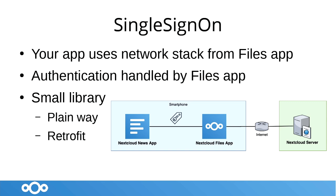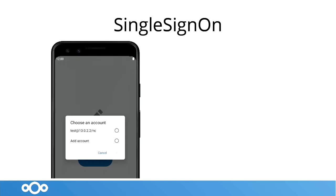On the right side you see a short diagram. In this case the Nextcloud News app is sending the request to the files app; the files app then handles the entire HTTPS and authorization, sends it to the server, and returns the response back to the News app. The News app does not need to know anything about the server.